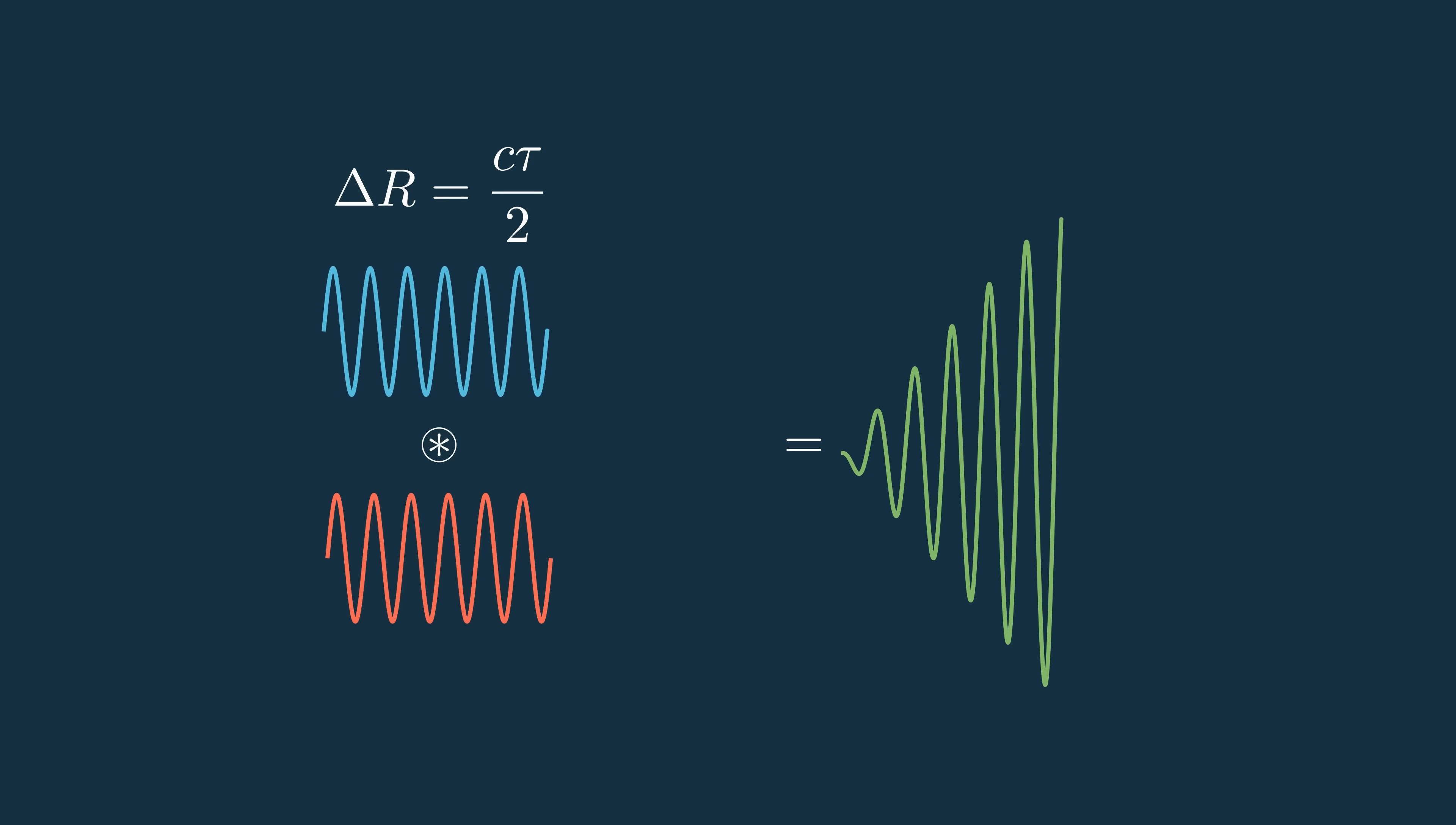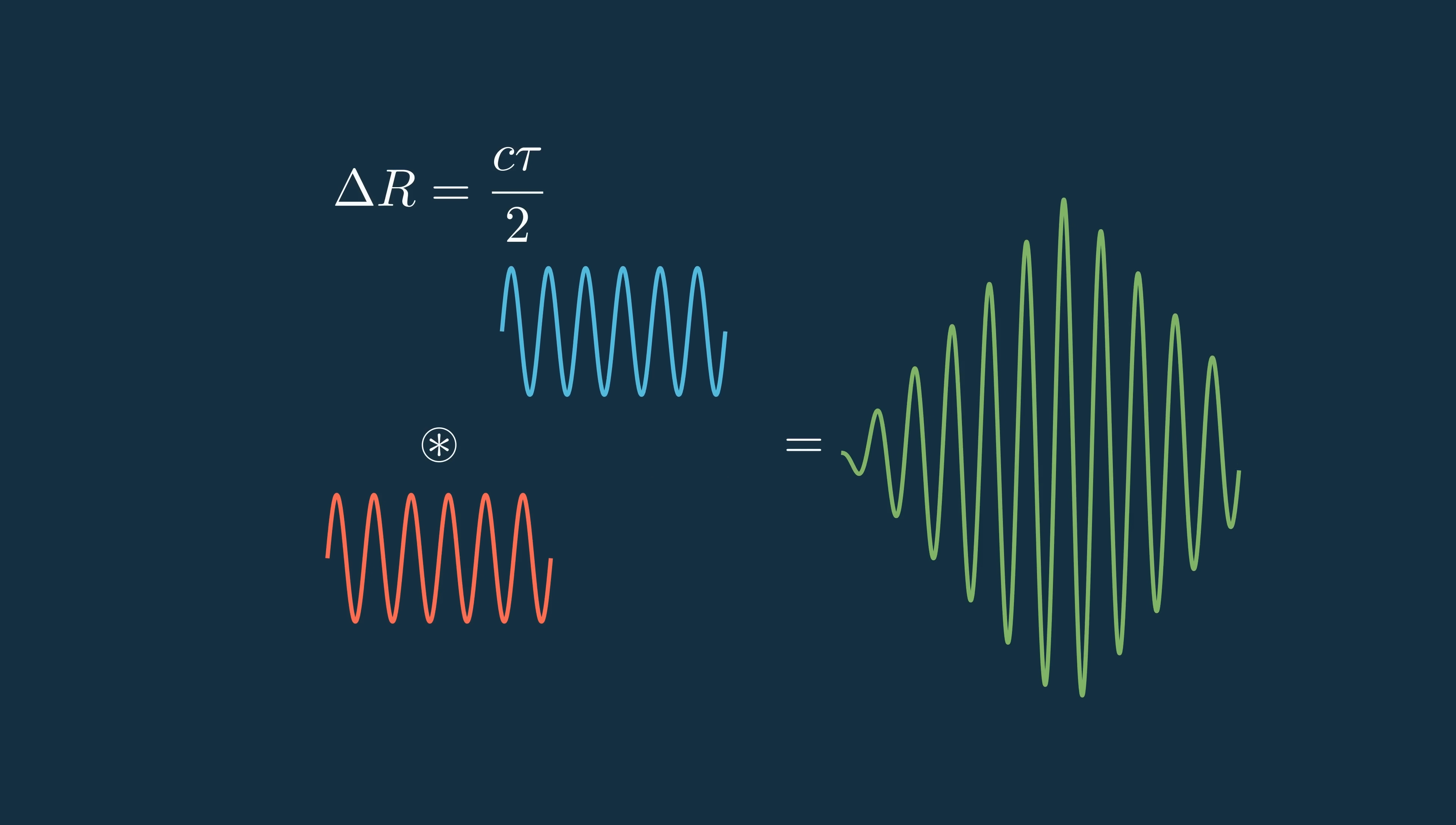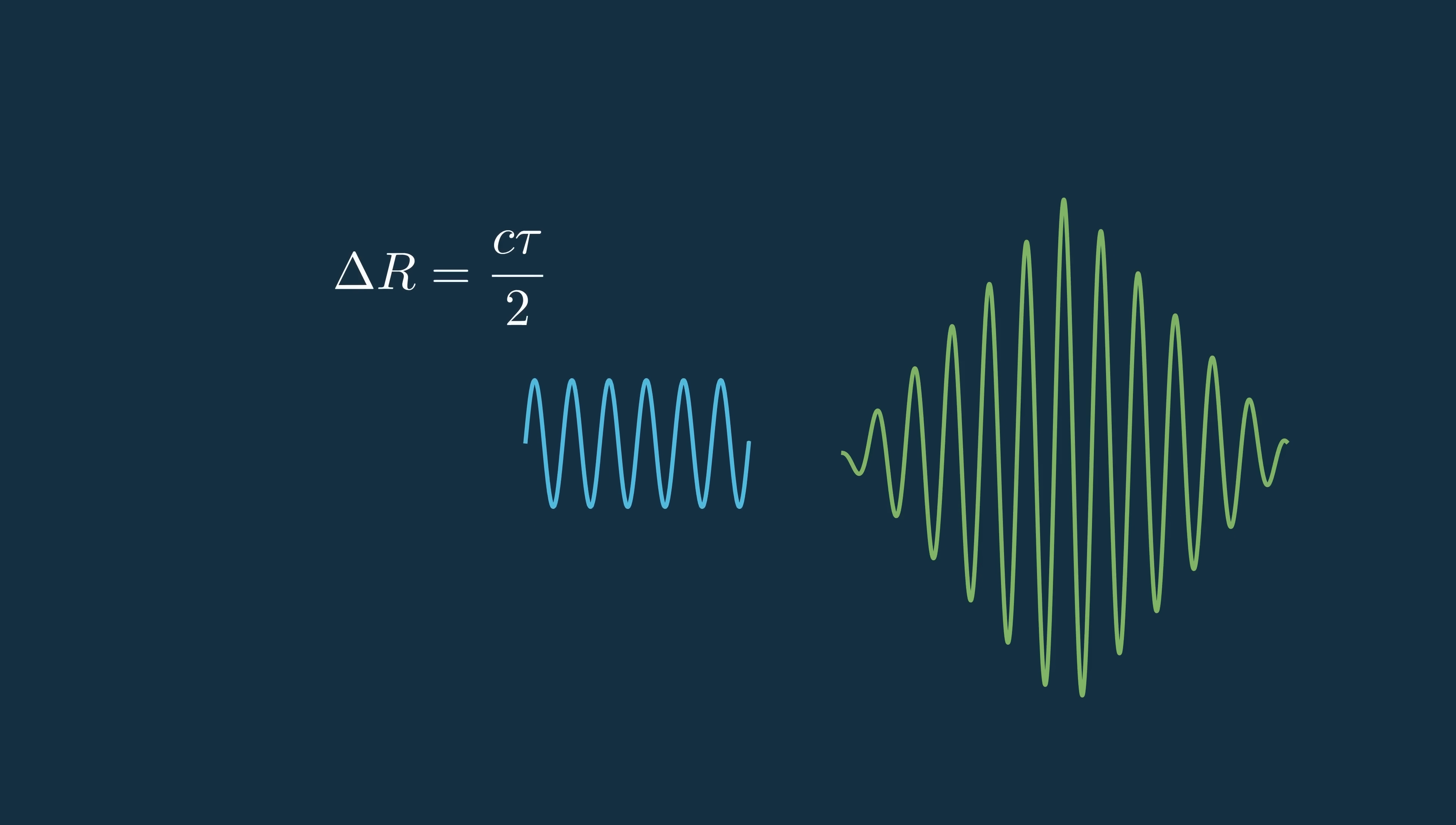but since it's just a single frequency sine wave, you still get that oscillatory nature because the transmit and receive signals are going in and out of phase with one another. Going back to just showing the input and correlation output, notice what happens as we start adding bandwidth.